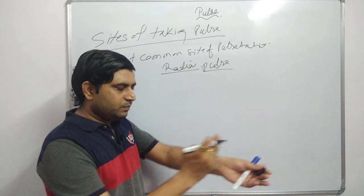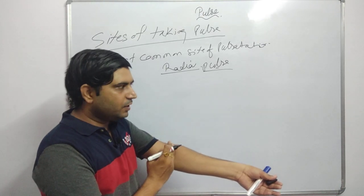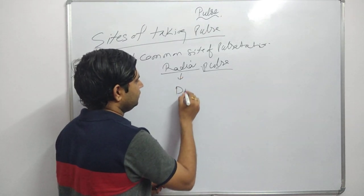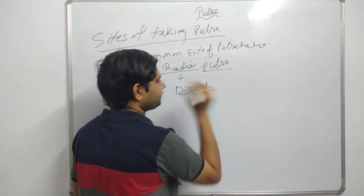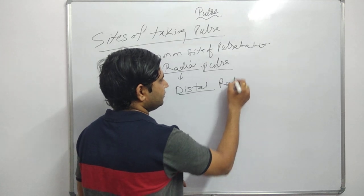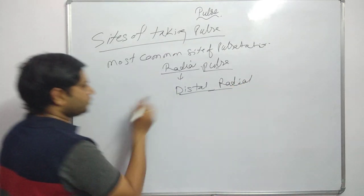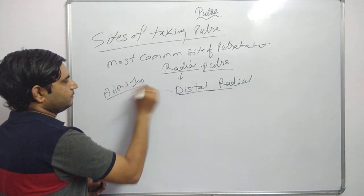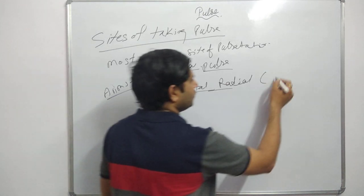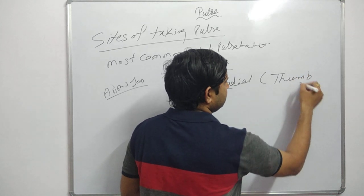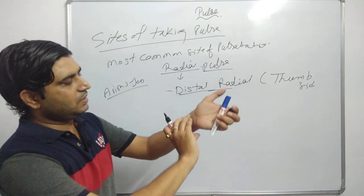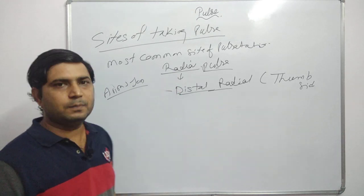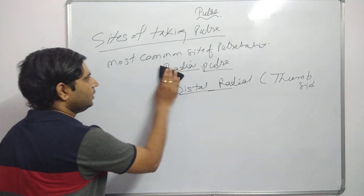The radial pulse is checked from the distal part of the radial artery. This is called the distal radial pulse. This question has come in AIIMS Jodhpur - from which part is radial pulse taken? The answer is the distal part, on the thumb side of the wrist. That is the most common first site - radial pulse.